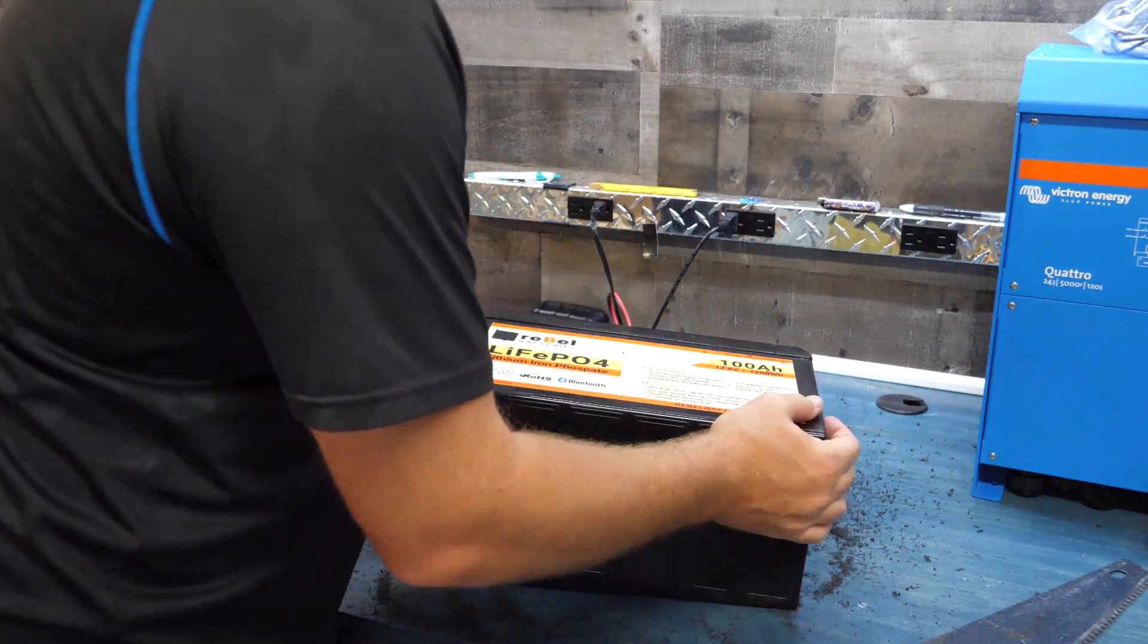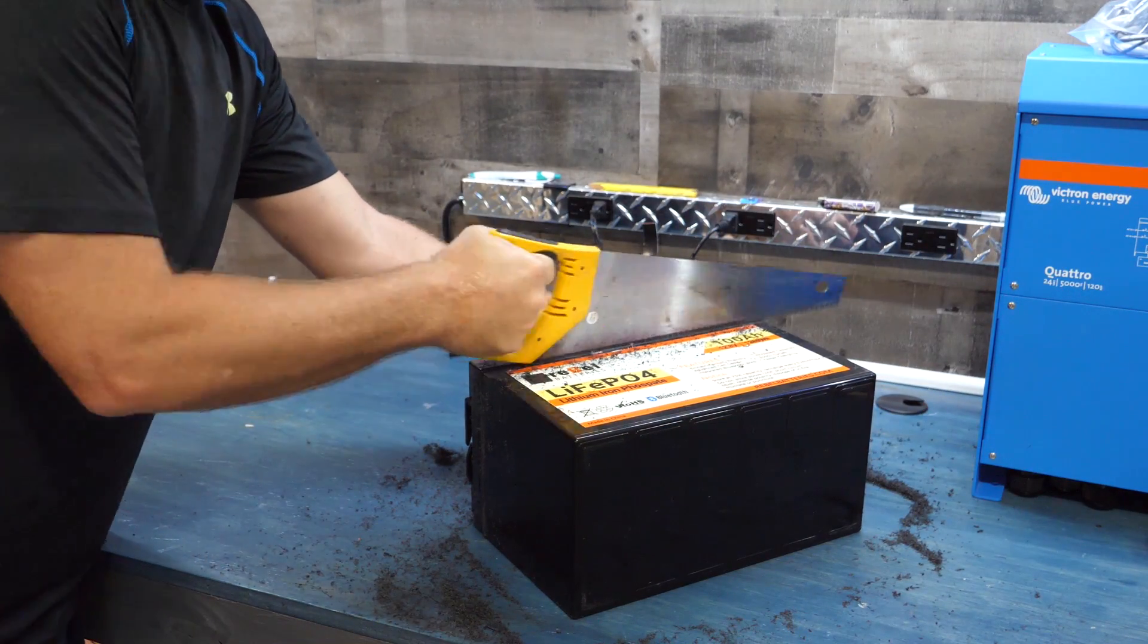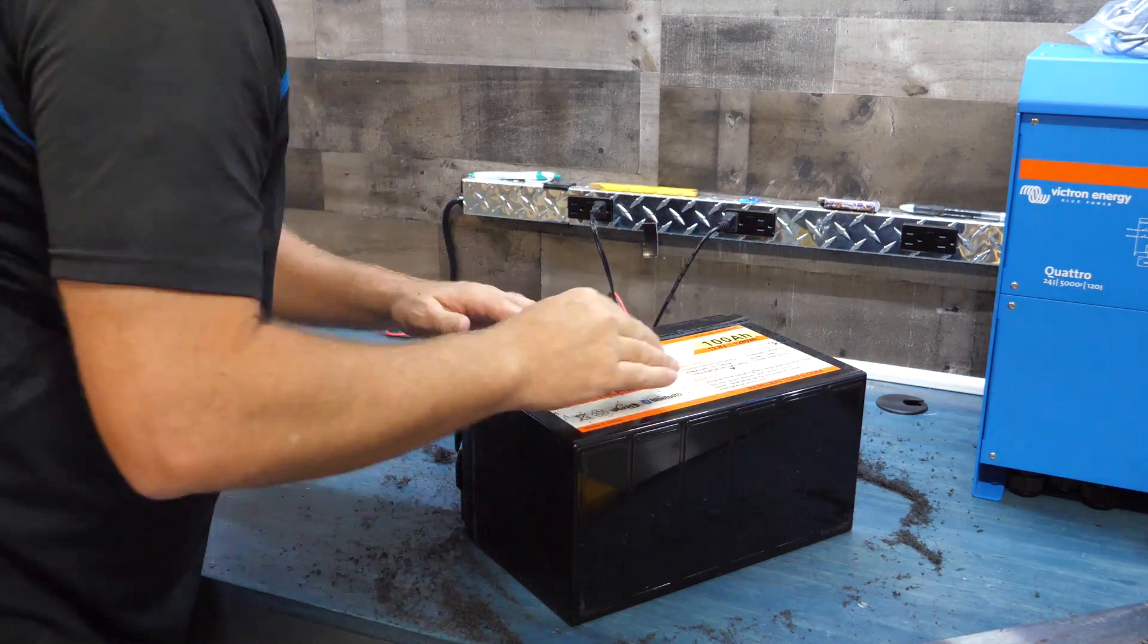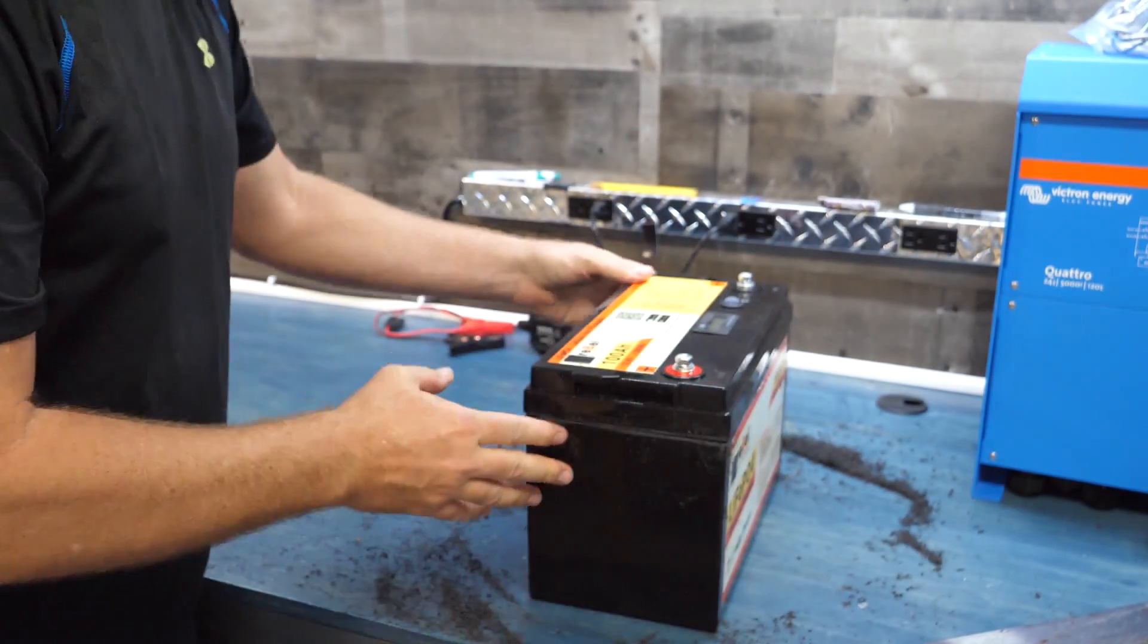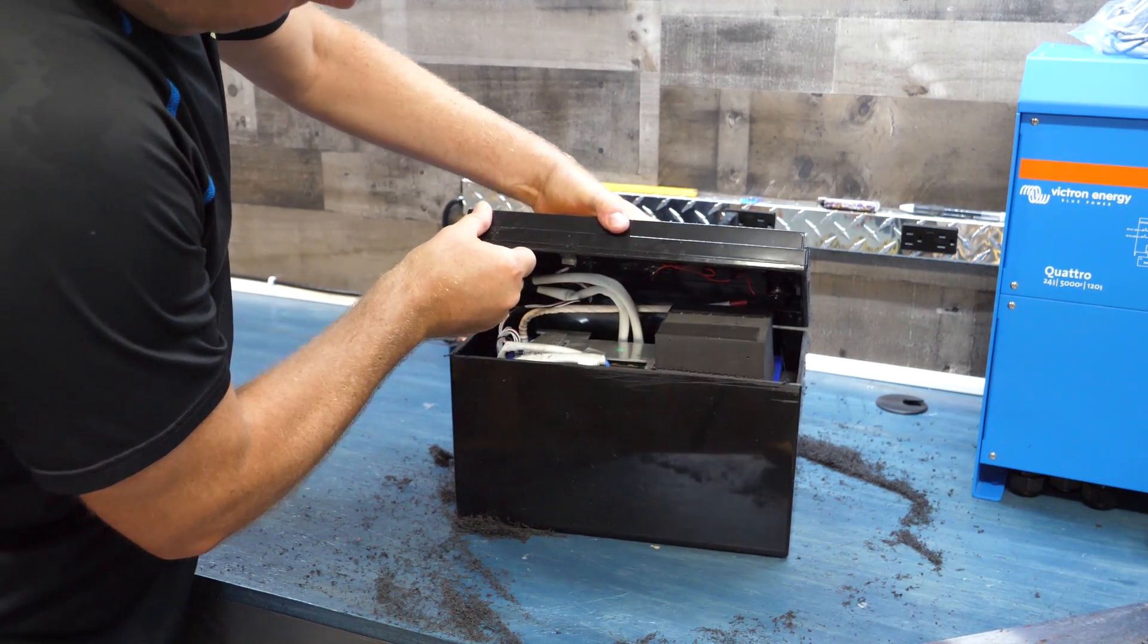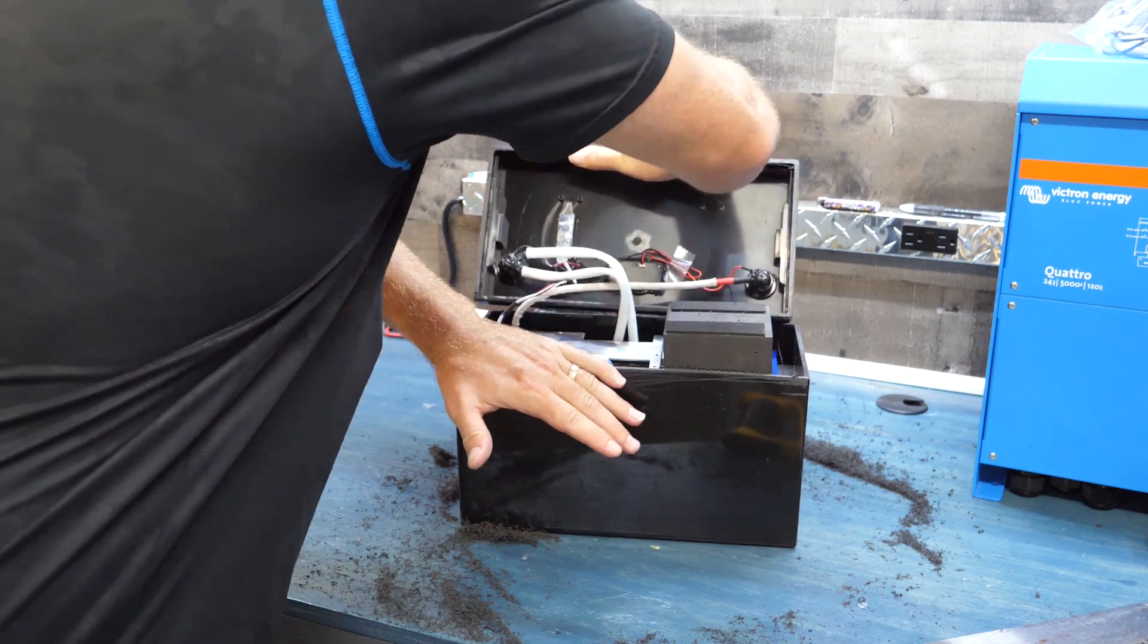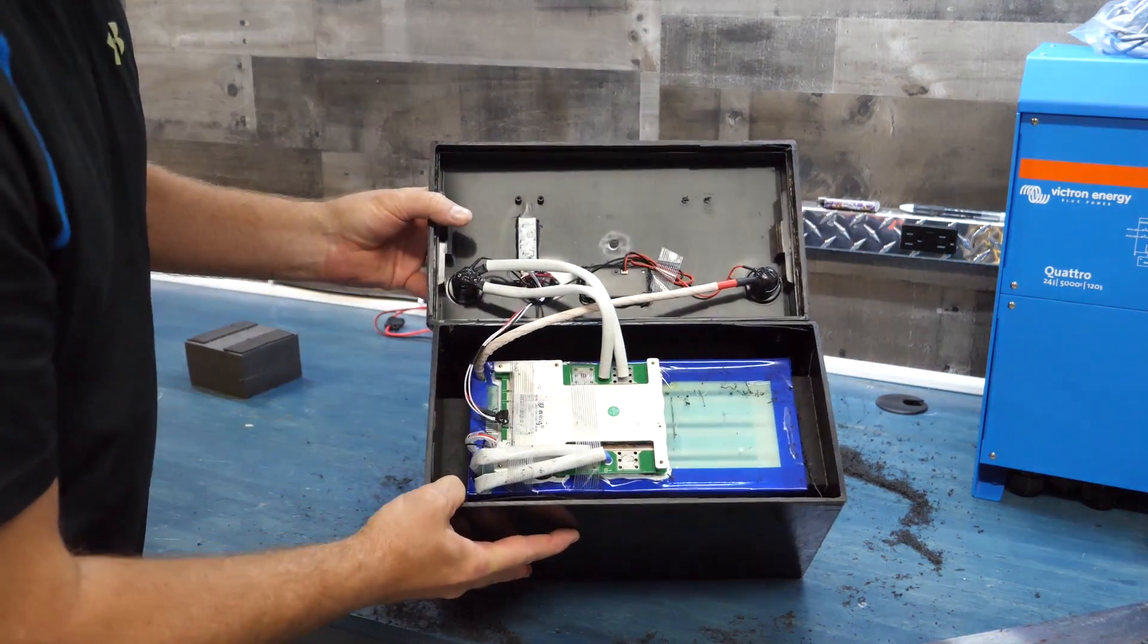Okay, we got the second side off, so now we're basically going to score the front and we'll be able to peel it back. Starting to see it break through there, so I think we're scored enough. I don't want to go too deep on this. I'll go ahead and tip this up, see if we can see what we can see here.